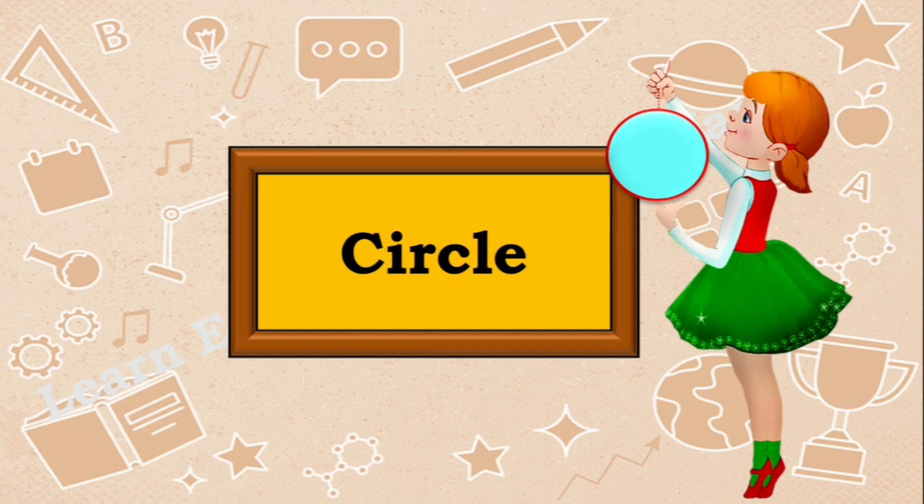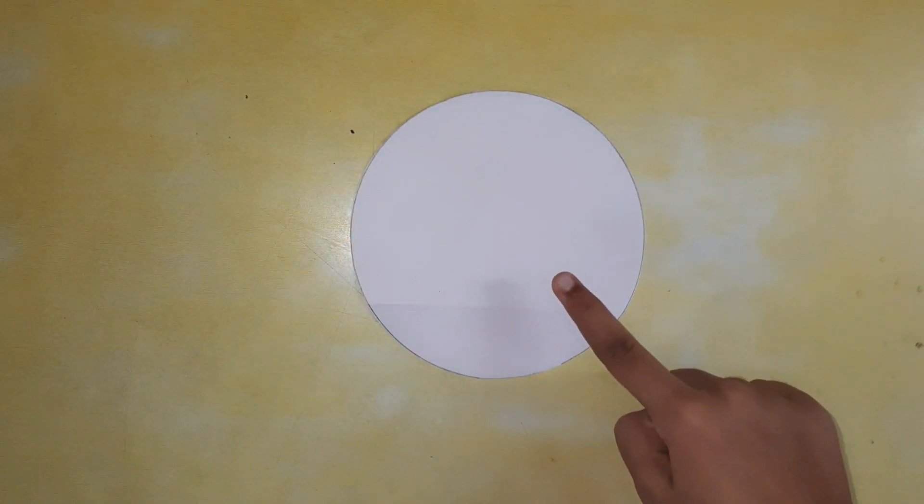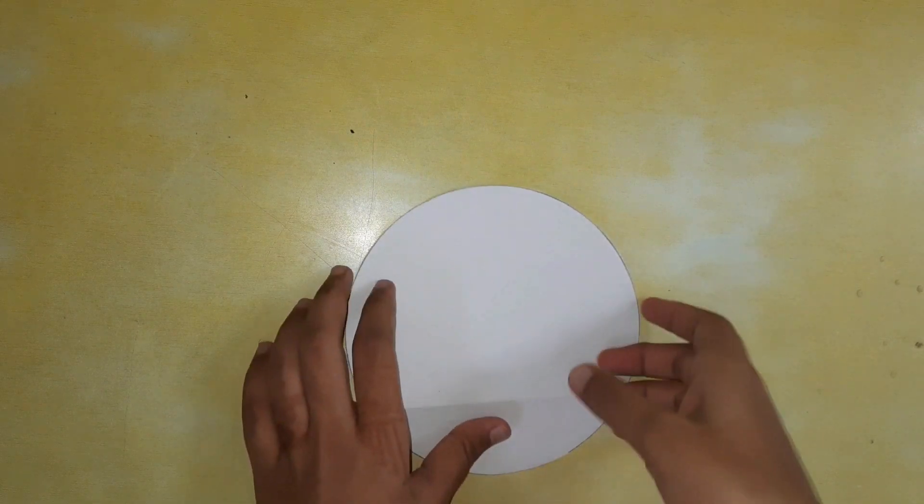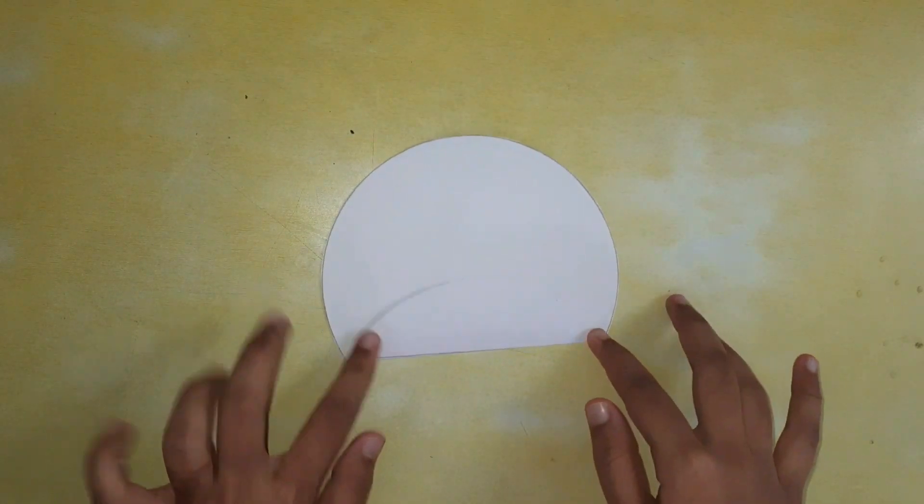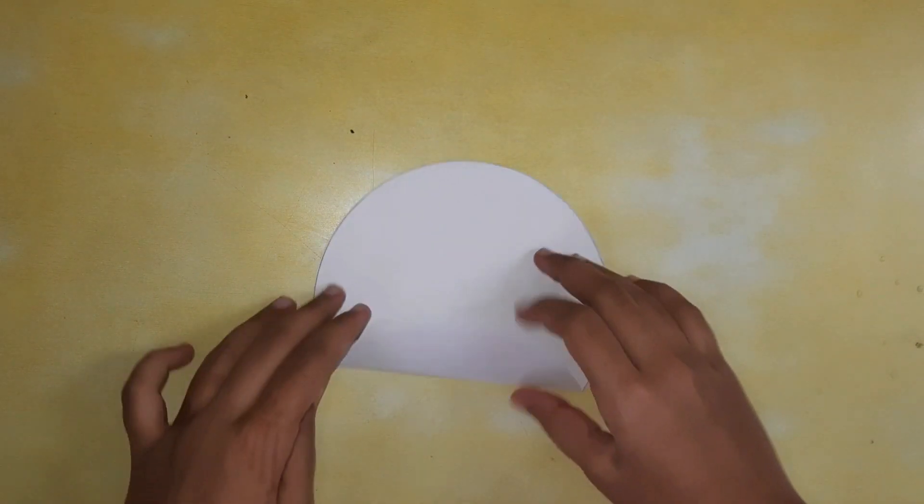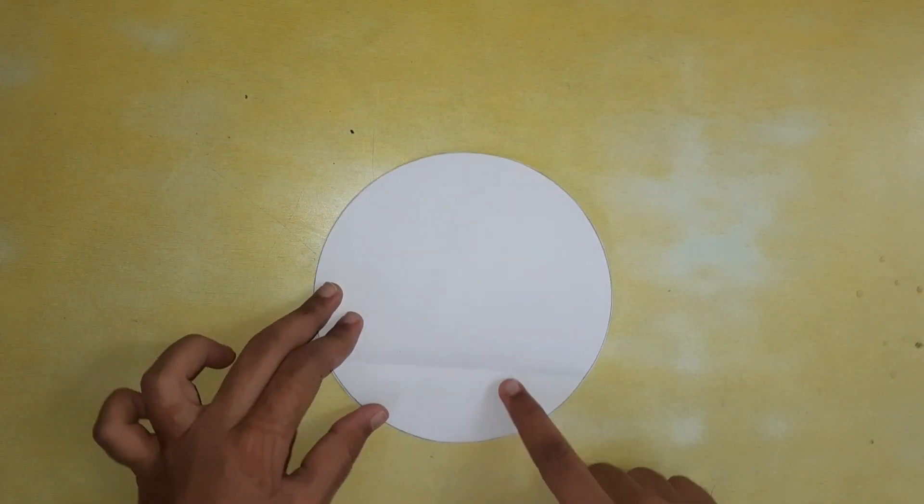So let us look at some common words that we use when we talk about circles. Children, we have this circle and now we are going to fold this circle like this. Can you see a fold has appeared here?